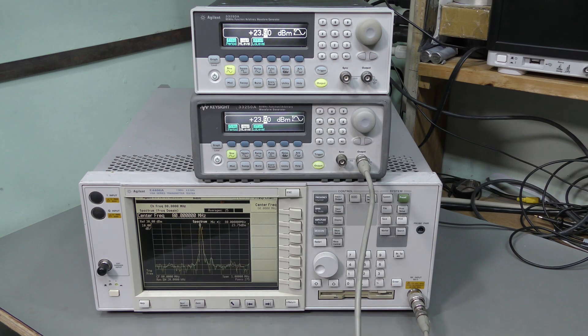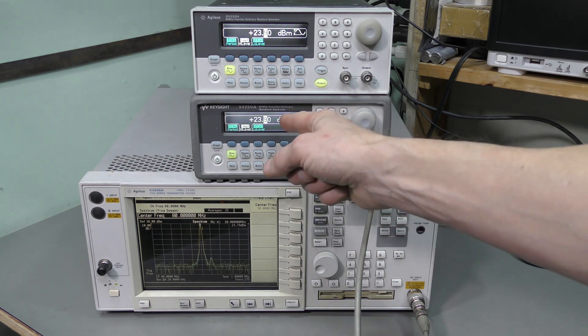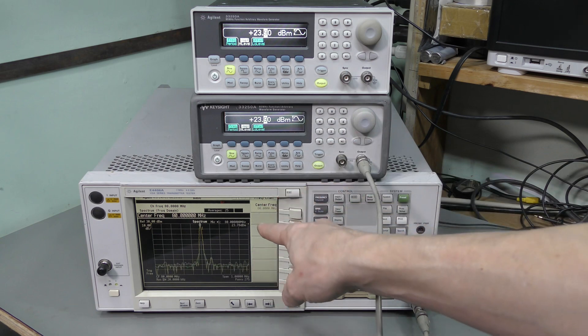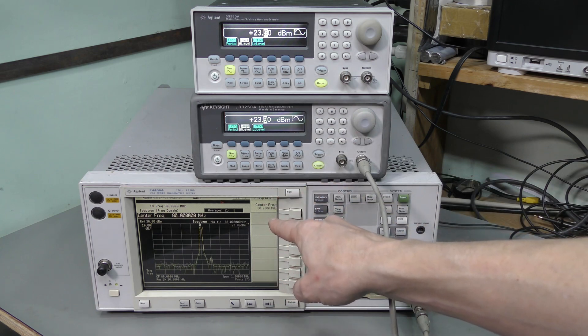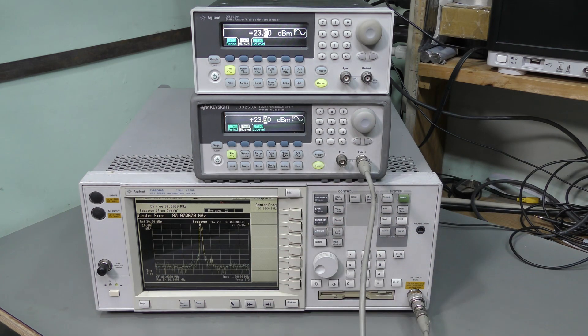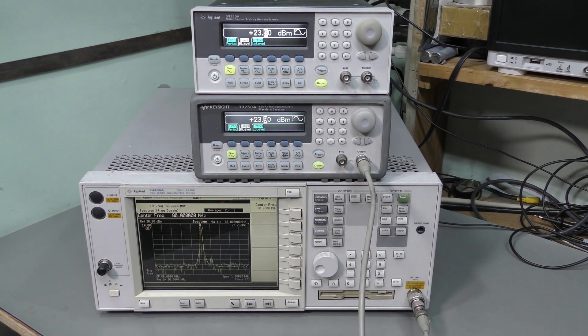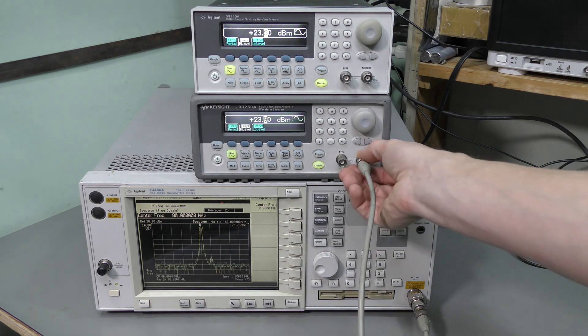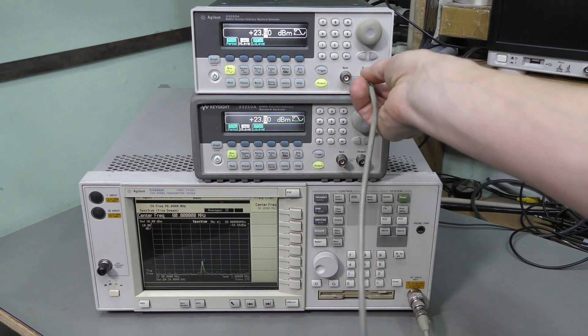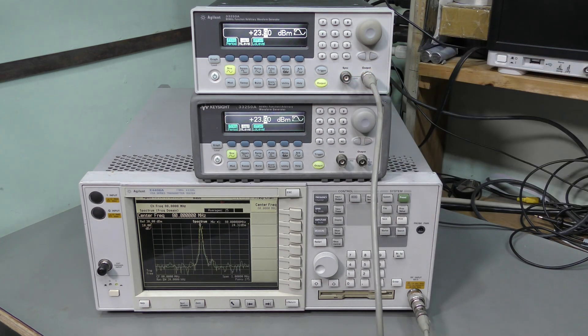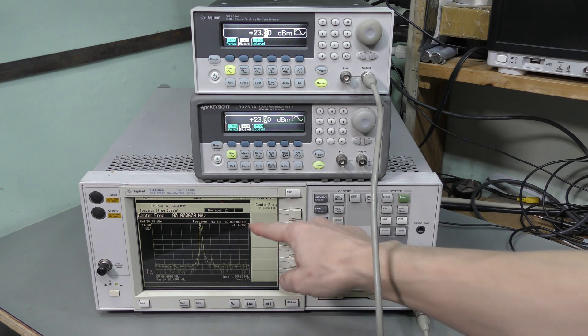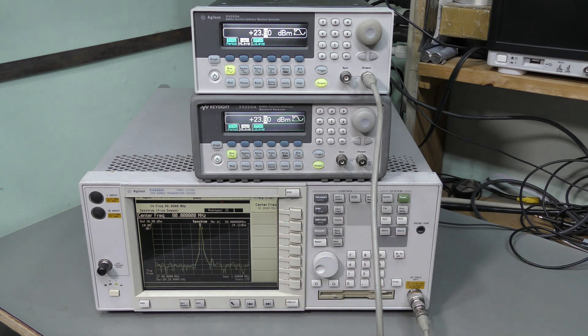And here is the spectrum analyzer. Look at this. 23.9 dBm here. And we read 23.8 or so on the spectrum analyzer. And power meter gave us about 23.67 I believe. Not too far. And now let's look at this one. 24.32. And the power meter gave us 24.17 I believe. Quite close.